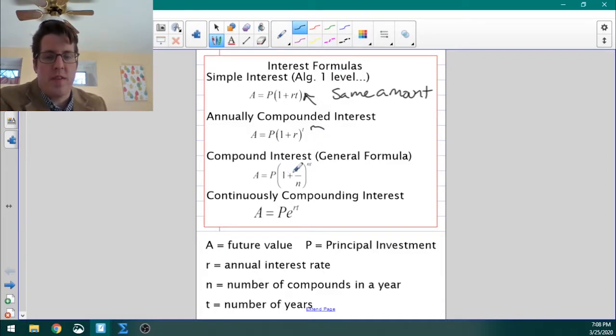If we have compounded interest that compounds at some other time that isn't just once per year, we would have to put something in our denominator, and we would have to put something in our exponent to configure that. Now continuously compounded interest, which we'll talk a lot about later, is here at the bottom. All of the legend or key is right here at the bottom. So some of this is Algebra 1, some of it's Algebra 2. We'll practice a little bit and put it into play and see how that works for us.